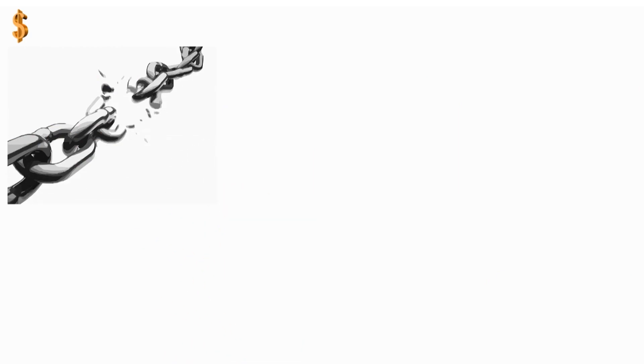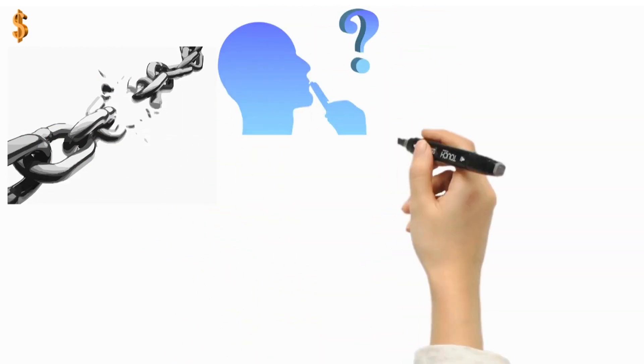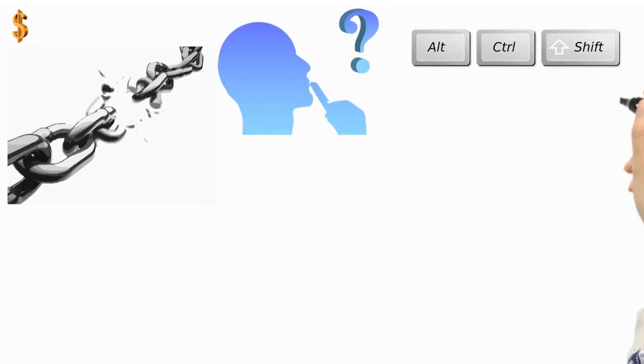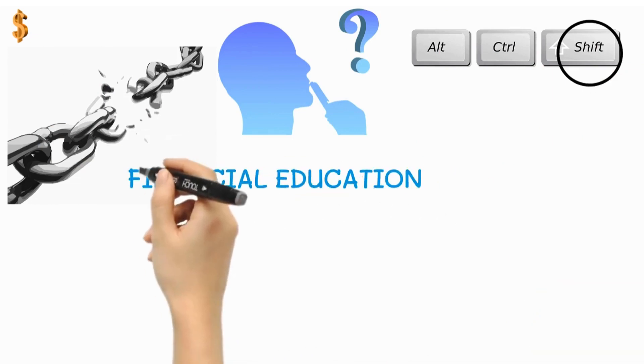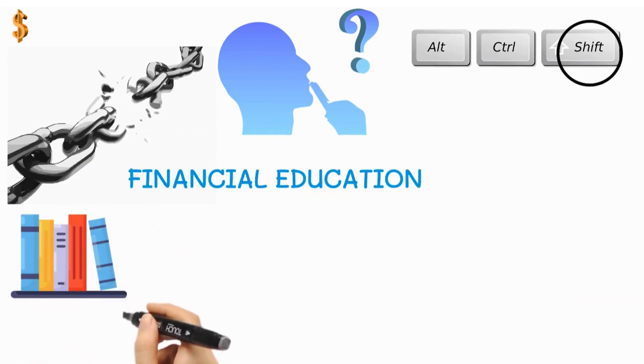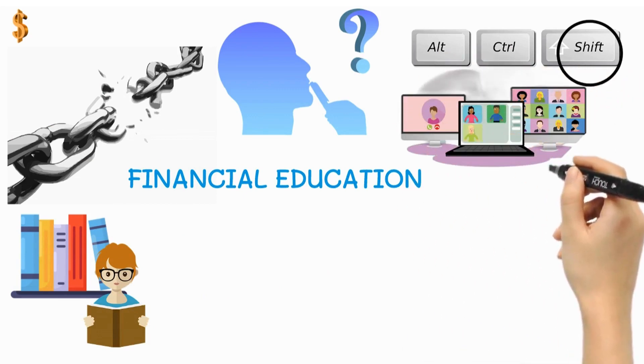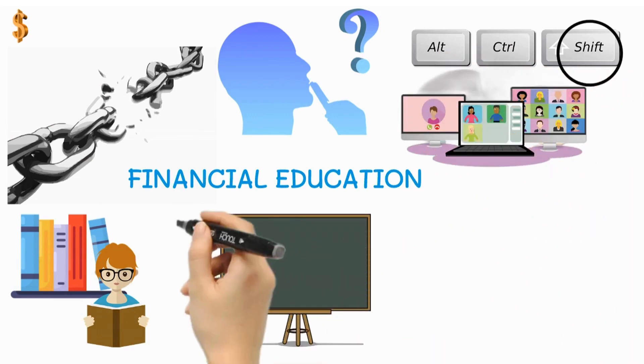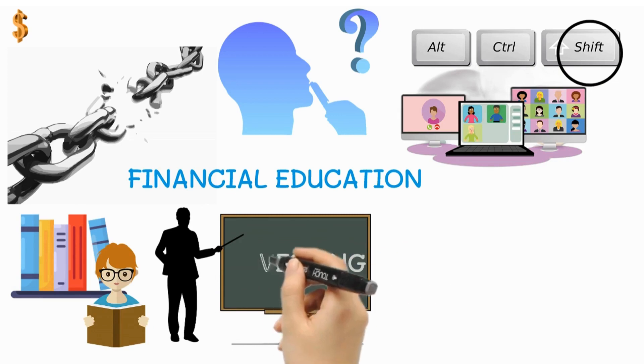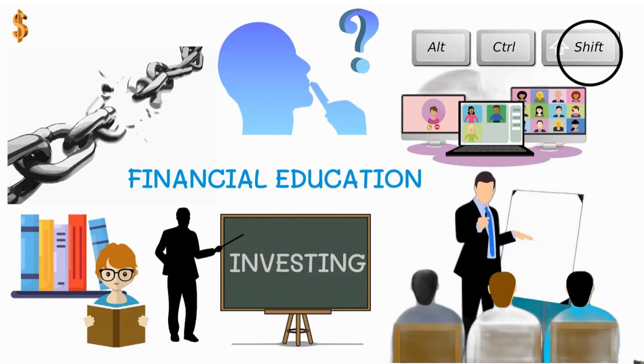To break free from this cycle, Kiyosaki advocates for a shift in mindset. Young individuals should actively seek out financial education, whether through self-learning, mentorship, or specialized courses. Understanding the basics of investing, creating multiple streams of income, and managing expenses is pivotal to achieving financial security.